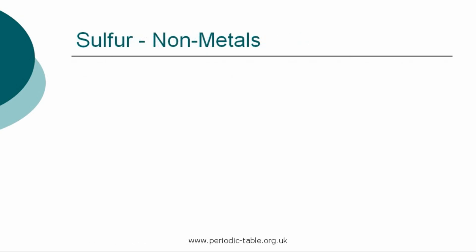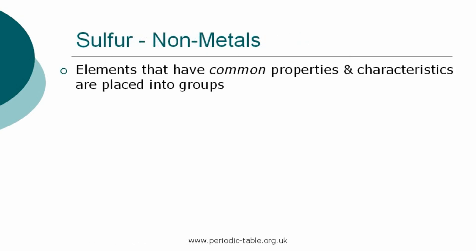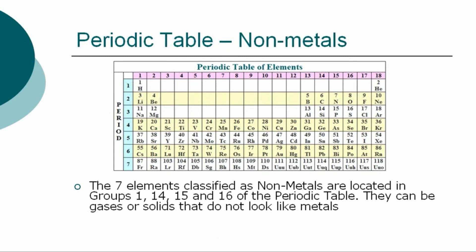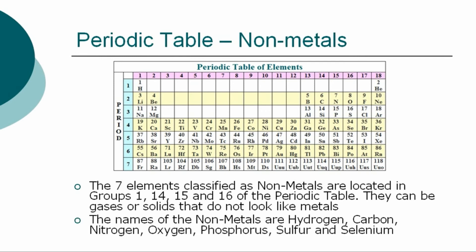Once the properties of an individual element have been identified, it is placed into a group of elements which have common properties and characteristics. Sulfur is in the group called the non-metals. The seven elements classified as non-metals are located in groups 1, 14, 15, and 16 in the periodic table. The names of the non-metals are hydrogen, carbon, nitrogen, oxygen, sulfur, phosphorus, and selenium.